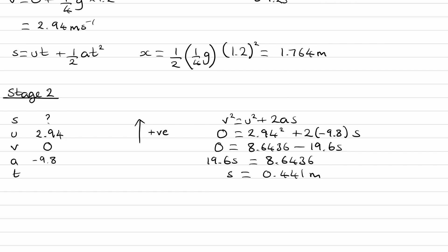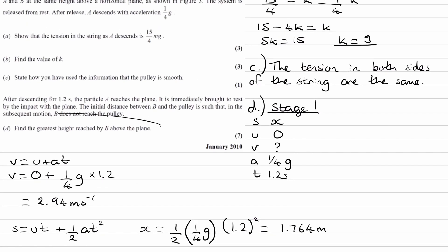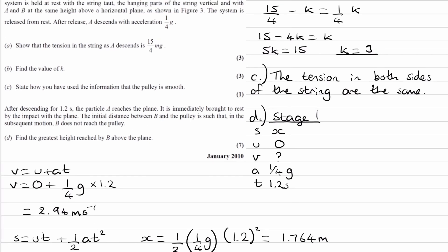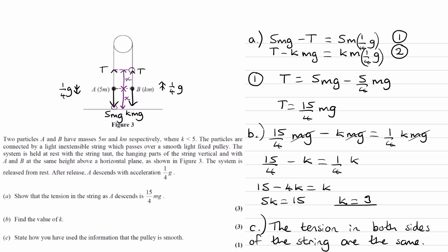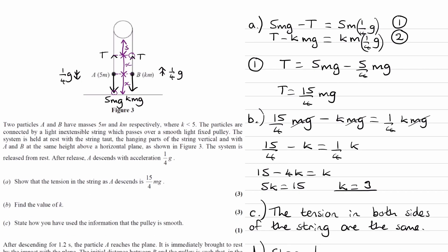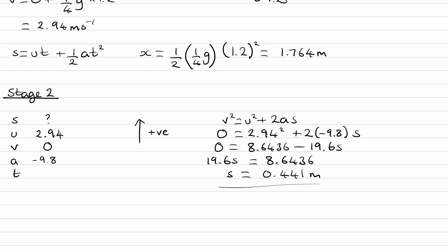Okay, so this isn't our final answer. We want to work out the greatest height reached by B above the plane. So if I go back to my diagram. When A hit the floor, B ended up here. It was a distance of 2X above the ground. And then it moves upwards a further distance of what I called S for stage 2. And we worked out S to be 0.441.